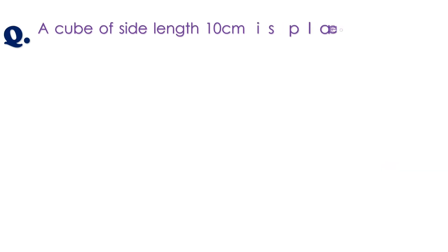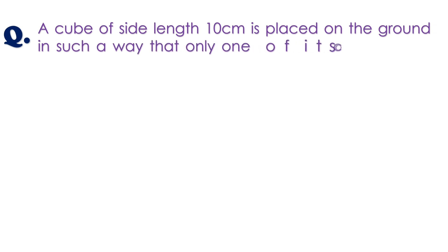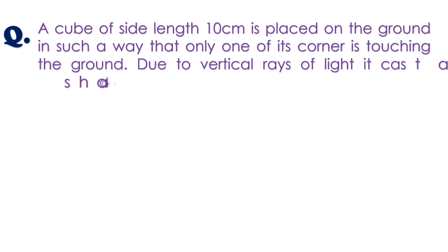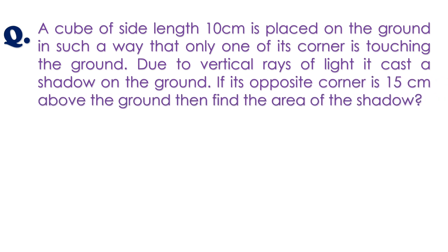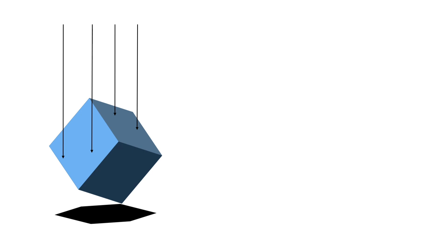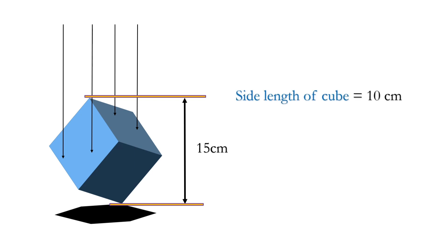Here is our previous question. A cube of side length 10cm is placed on the ground in such a way that only one of its corners is touching the ground. Due to vertical rays of light, it casts a shadow on the ground. If its opposite corner is 15cm above the ground, then find the area of the shadow. Here is the cube — some vertical rays of light are falling on it, forming a shadow on the ground. If its vertical height is 15cm and side length of cube is 10cm, then find the area of shadow.